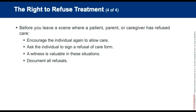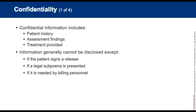If the condition worsens, advise patients, parents, and caregivers that they can call 911 back if they change their mind. Advise the patient, parent, or caregiver to contact his or her own physician as soon as possible. Ask the patient, parent, or caregiver to sign the refusal of treatment form, and a witness should be present. Thoroughly document all refusals.